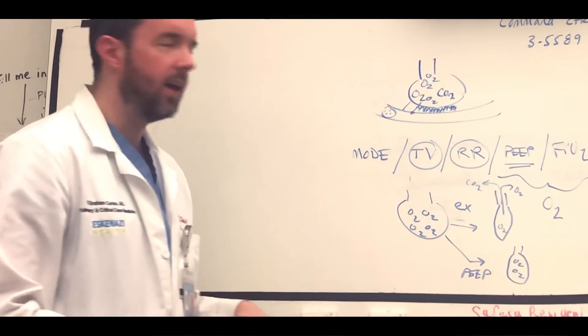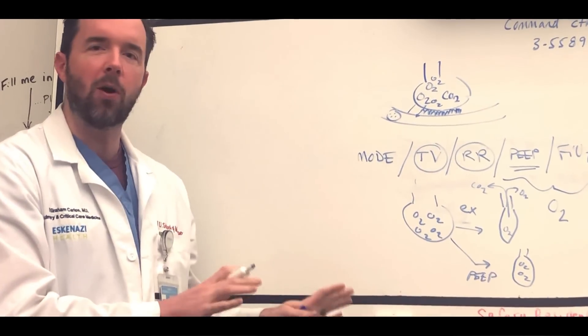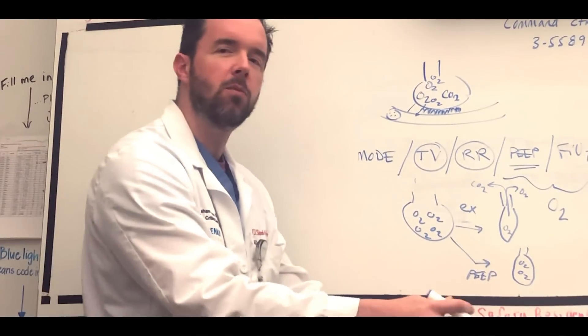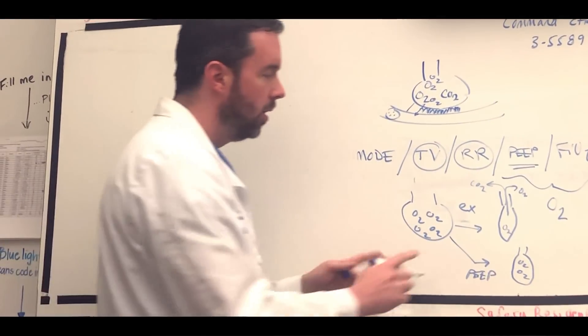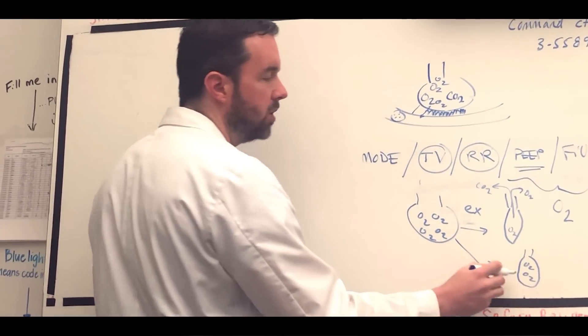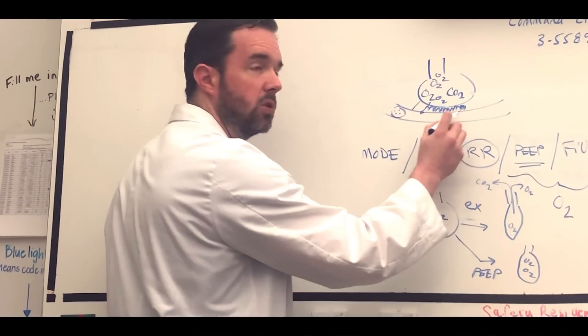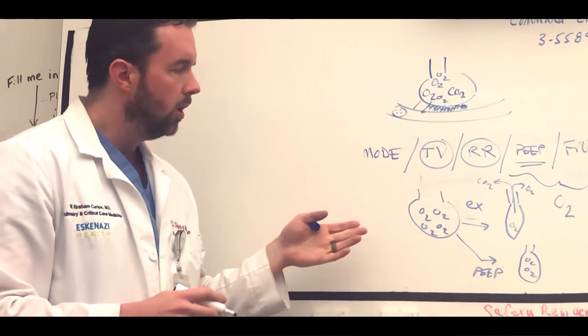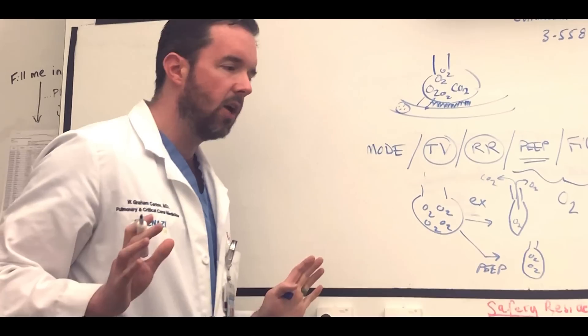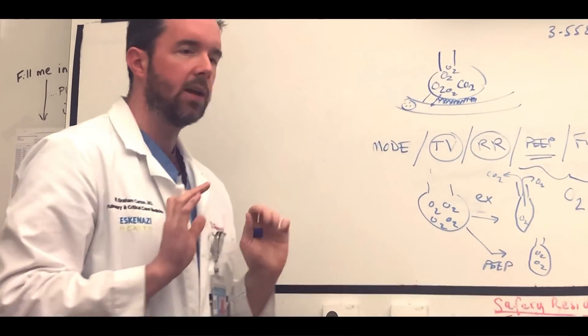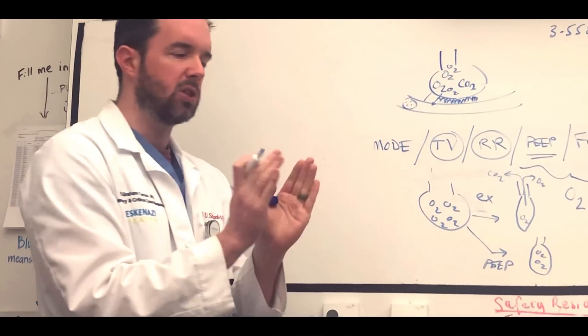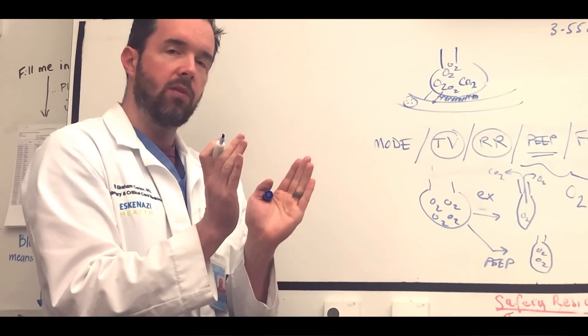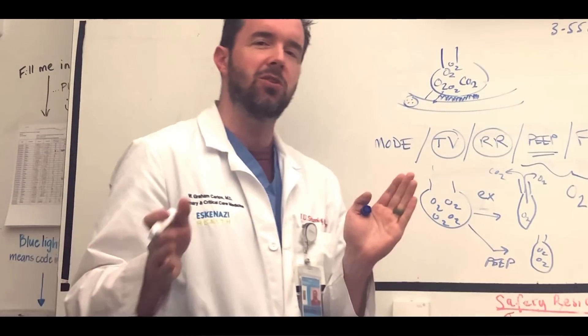We tell some oxygens, hey guys, hang out at the party a little bit more. Party's not over. We want you to spend some more time diffusing across. By doing that, we give more time for oxygen to diffuse across, particularly when there's barriers to oxygenation. So by using PEEP as air is coming out of the lungs, we're providing a back pressure or a counter pressure to splint open airways and alveoli to afford more time for oxygen to diffuse.